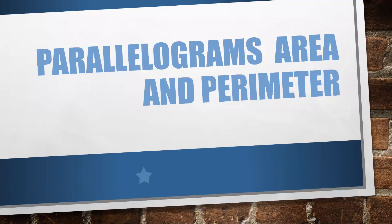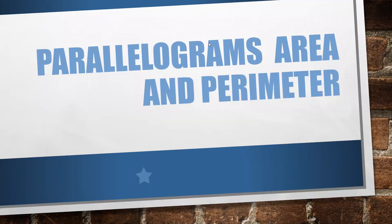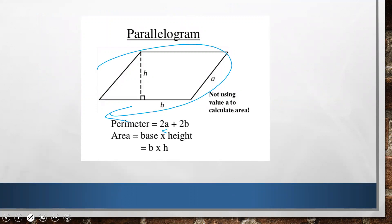Let's talk about parallelograms, area, and perimeter. A parallelogram's perimeter, that's the distance around the parallelogram, is two times a plus two times b where a and b are side lengths.